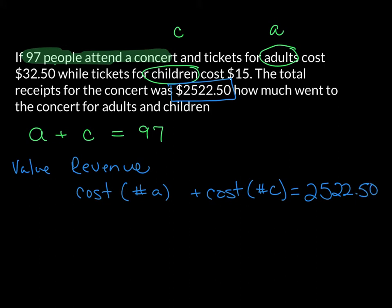So this is how we would write this equation. We would write it out as $32.50 for the adults' tickets plus $15 for the children's tickets is equal to $2,522.50.